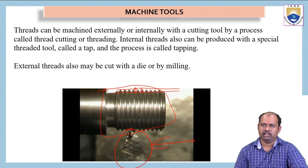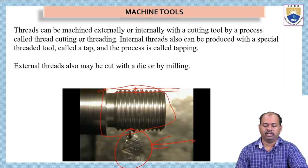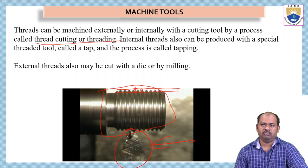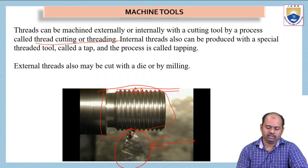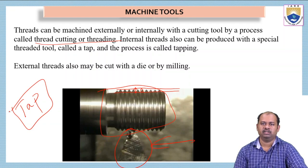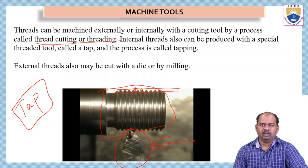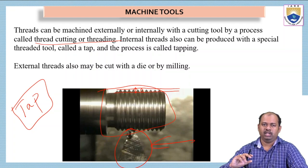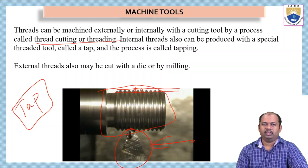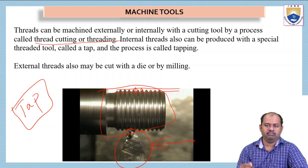Threads can be machined externally or internally, depending on the particular application. Both can be done with a cutting tool by a process called thread cutting or threading. The operation done on the lathe machine is called thread cutting or threading. Internal threads can also be produced with a special thread tool called a tap.